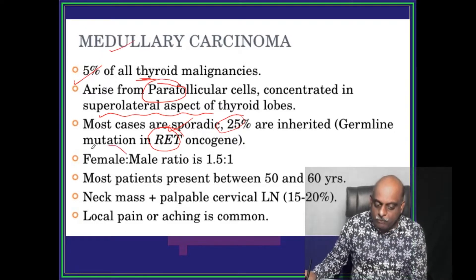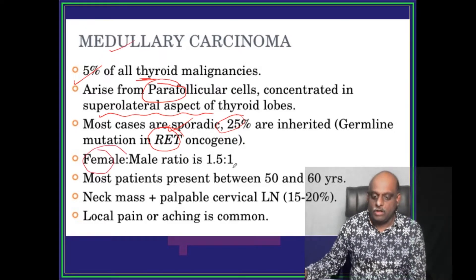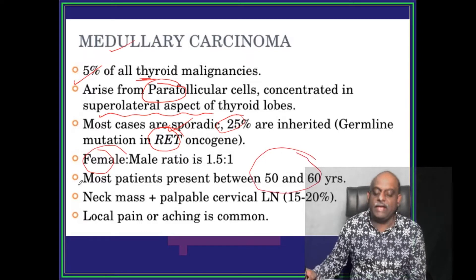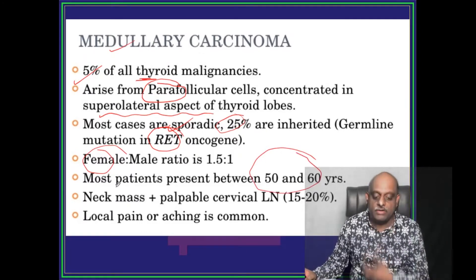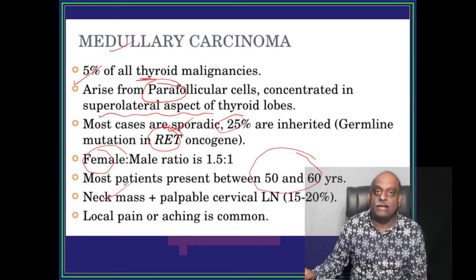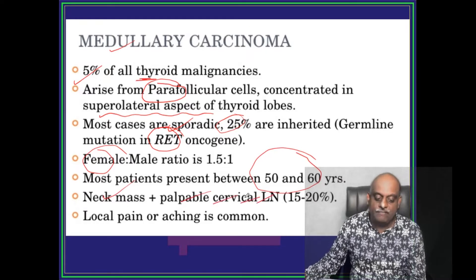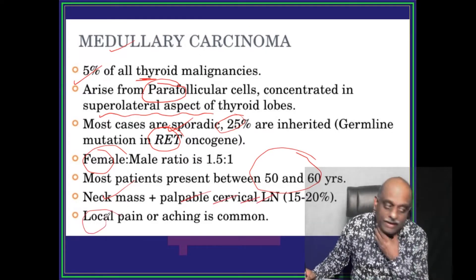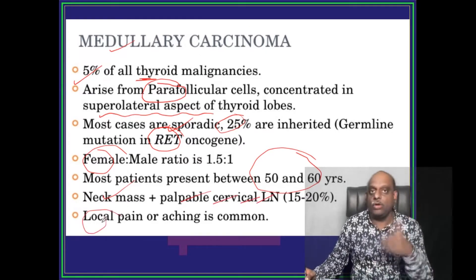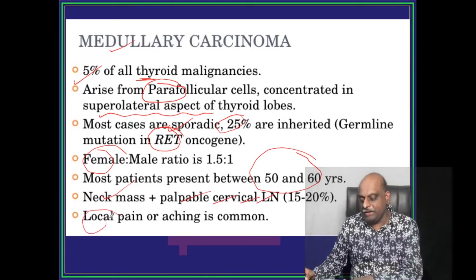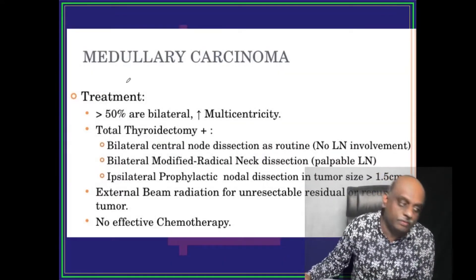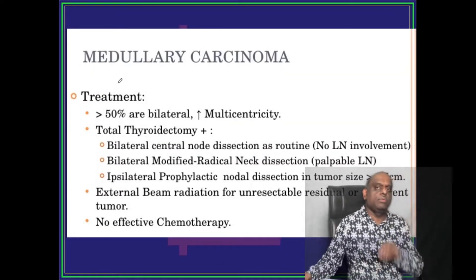Female preponderance is shown. Typical age is 50 to 60. There will be a neck mass, goiter, a palpable cervical lymph node, and local pain. These are all part of the presenting features of medullary carcinoma.